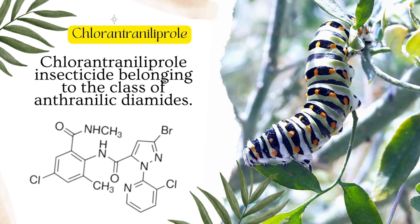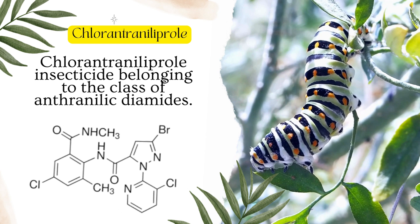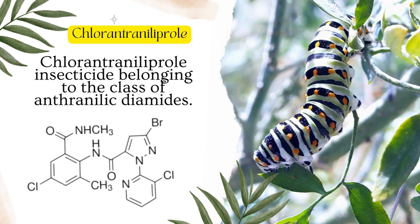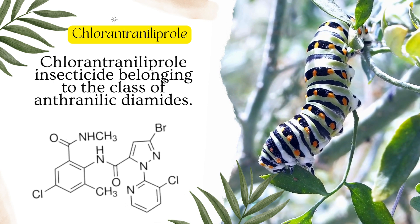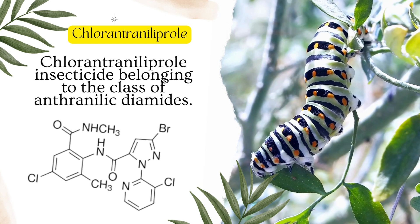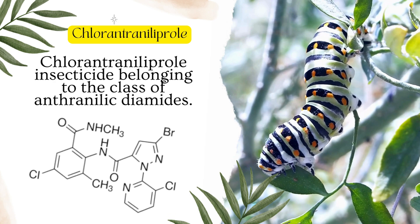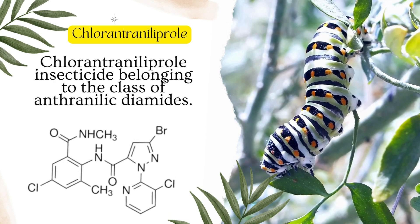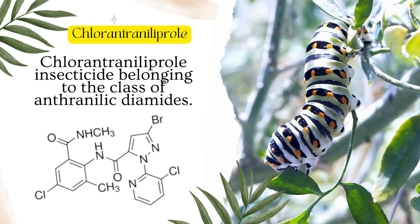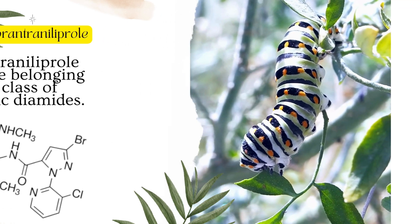Chlorantraniliprole is a relatively new insecticide belonging to the class of anthranilic diamides. It acts as a potent insecticide targeting a wide range of pests, including lepidopteran larvae such as caterpillars, which are significant agricultural pests. Here's a breakdown of its chemistry, mode of action, formulation, and uses.